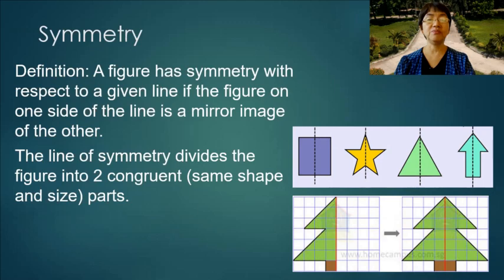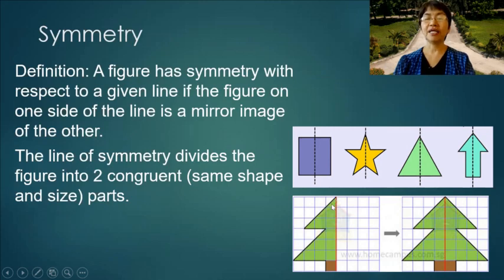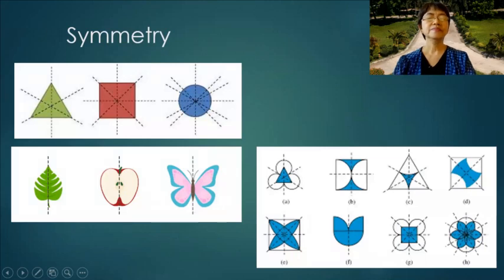This means the parts have the same shape and the same size. Let's look at the examples. Here we have the lines of symmetry shown as broken lines. The figure on the left side is a reflection of the figure on the right side because they are symmetrical with respect to the vertical line — so it has vertical symmetry. Looking at this Christmas tree, the left side is reflected on the right side, and the line of symmetry is the vertical line.